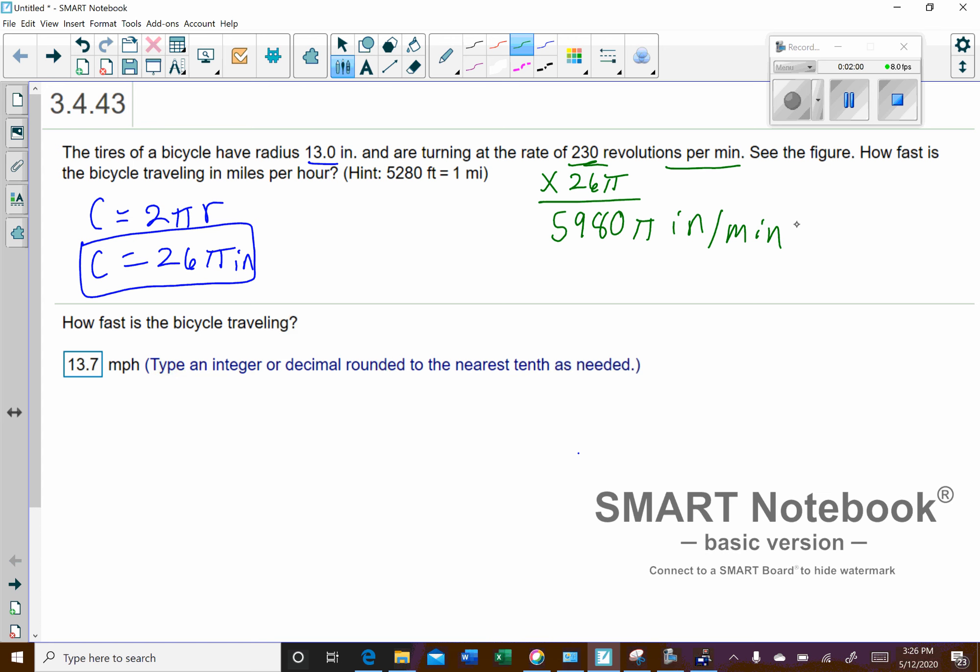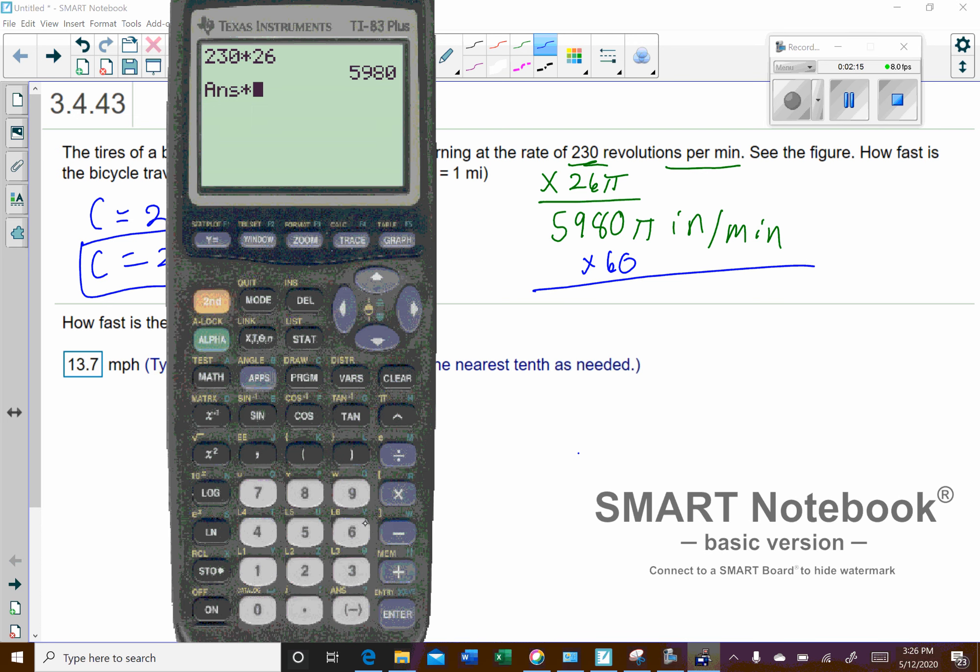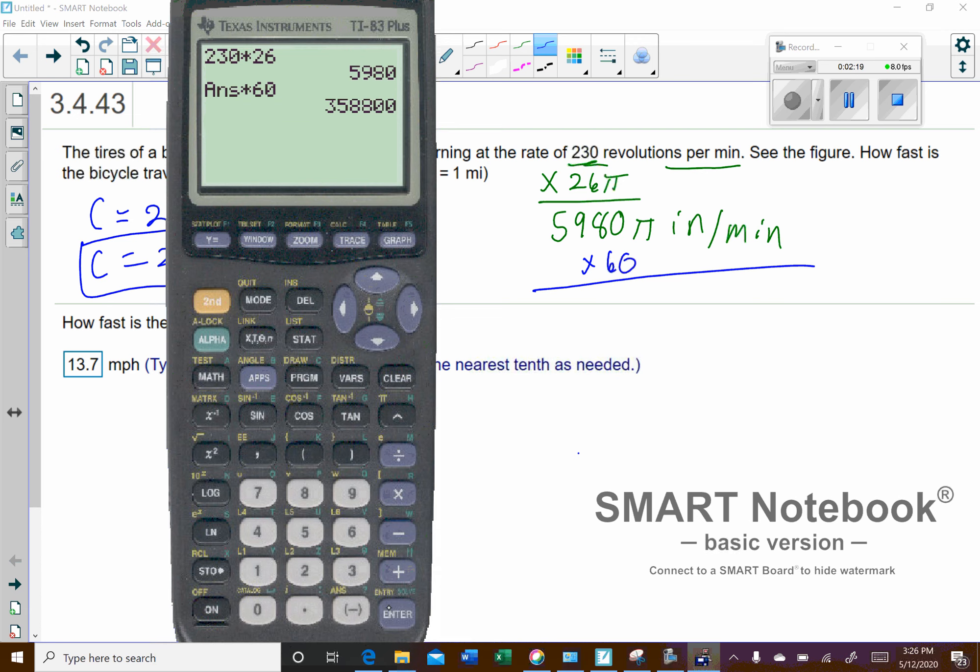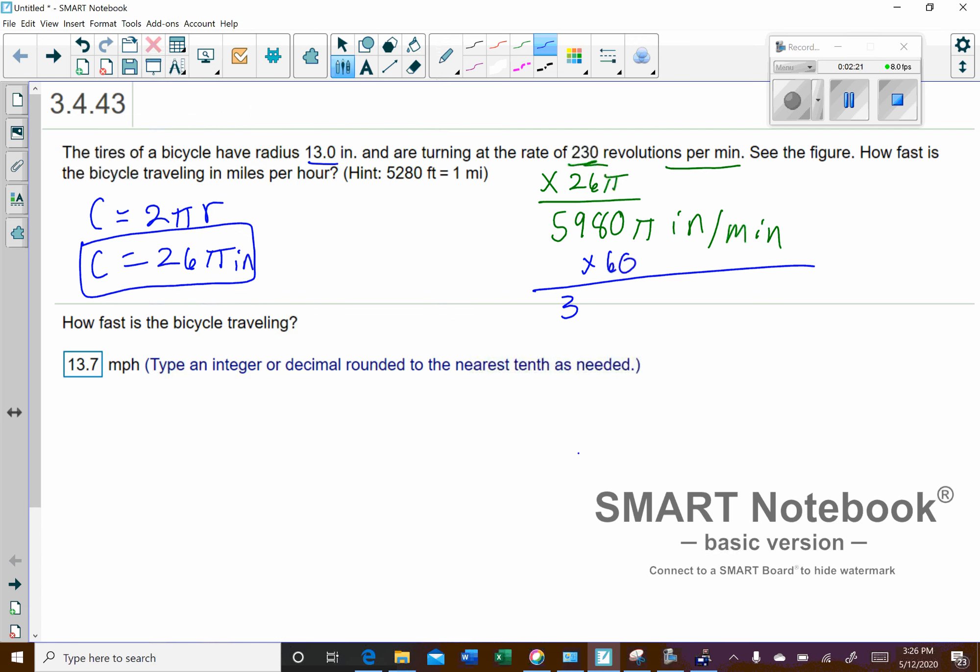And so if we want to convert that to inches per hour, we'll go ahead and multiply by 60. So we'll take that and multiply by 60. So you get a pretty big number—358,800, and then don't forget the π. That's going to be inches per hour.